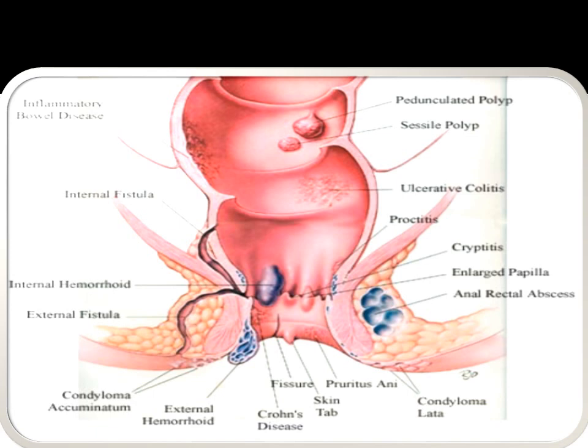Here you can see the fissure. An old healed fissure is seen as a skin tag. This is the anal opening. Pruritus ani is seen over this region. Condyloma lata can be seen on the buttocks nearby. External hemorrhoids can be seen near the anal opening. External fistula can open toward the surface of the buttocks. Anal atresia and hypertrophied anal papilla above the dentate line can also be seen. Cryptitis is also seen in this region.